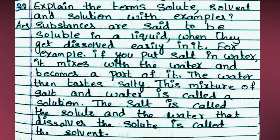Third question: Explain the terms solute, solvent, and solution with examples. Answer: Substances are said to be soluble in a liquid when they get dissolved easily in it. For example, if you put salt in water, it mixes with the water and becomes a part of it — the water then tastes salty. This mixture of salt and water is called a solution. The salt is called the solute, and the water that dissolves the solute is called the solvent.